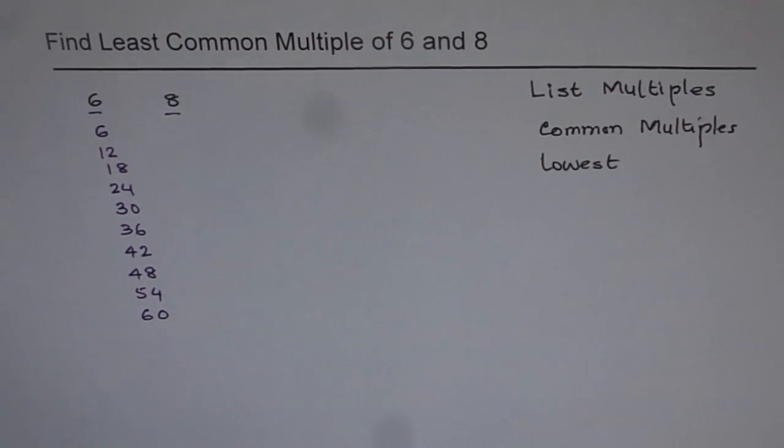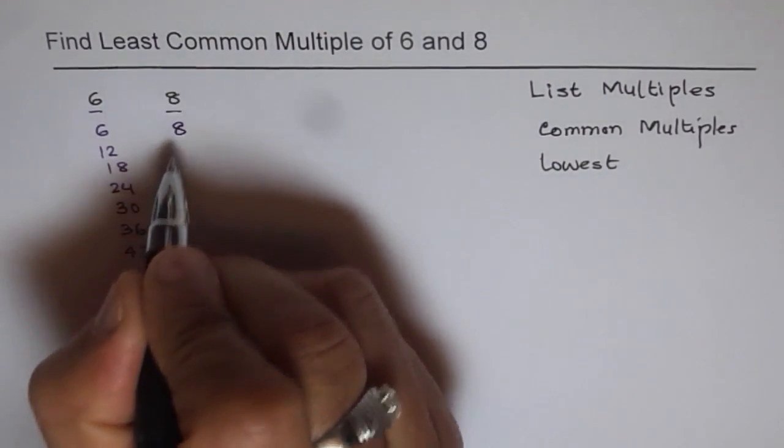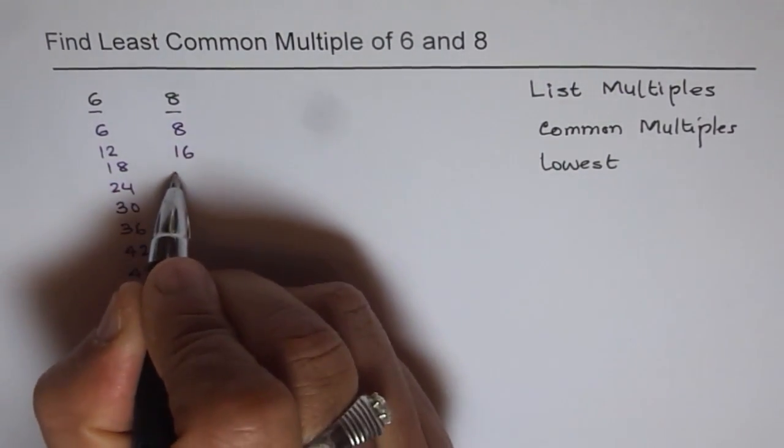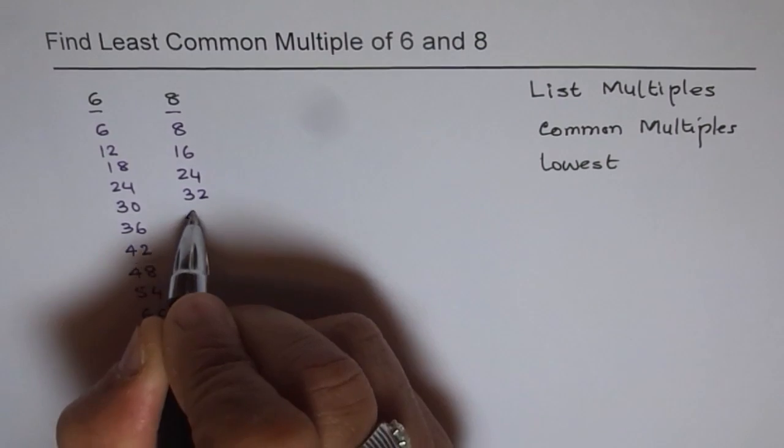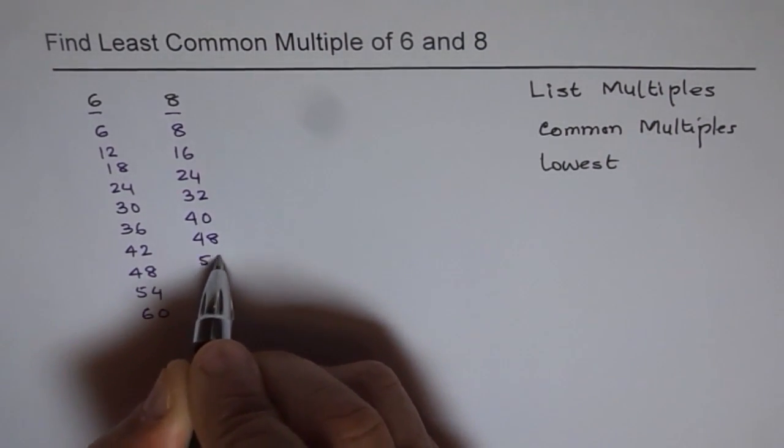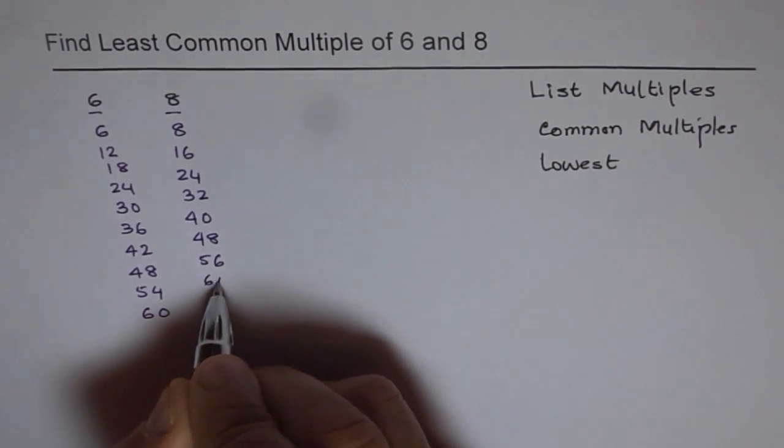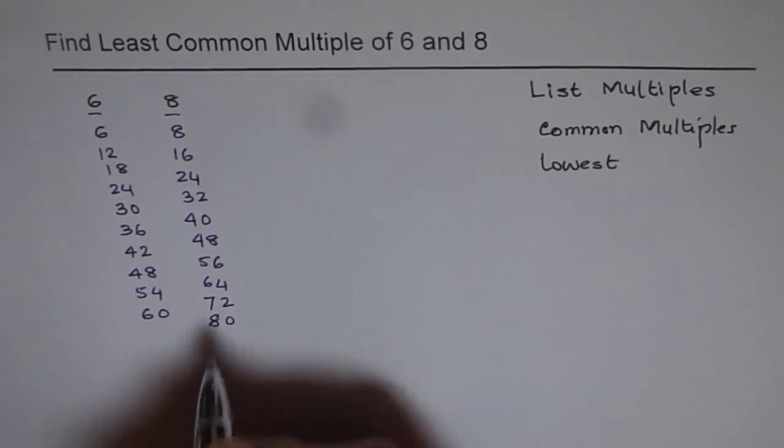So let's list our multiples up to times 10 and then we'll figure out the rest. So 8 times 1 is 8, times 2 is 16, 24, 32, 40, 48, 56, 64, 72 and 80.